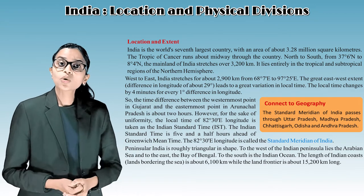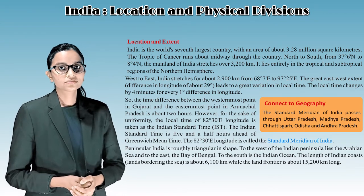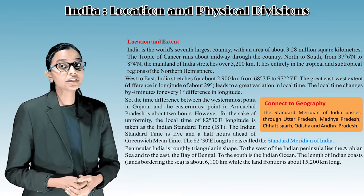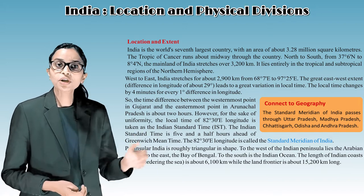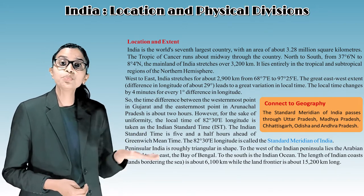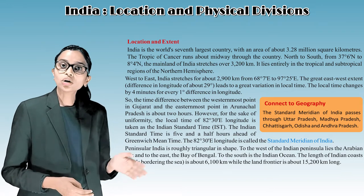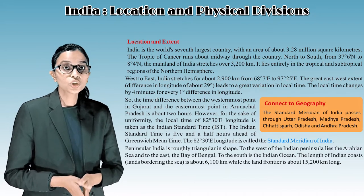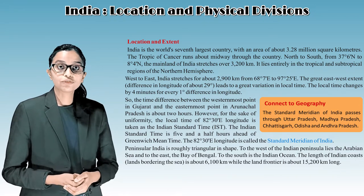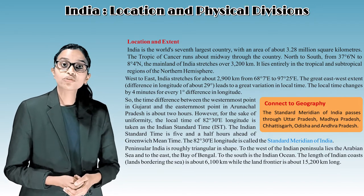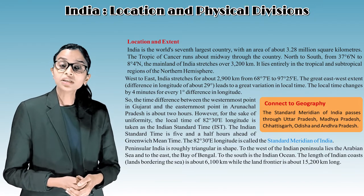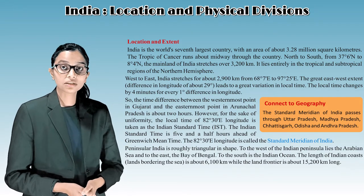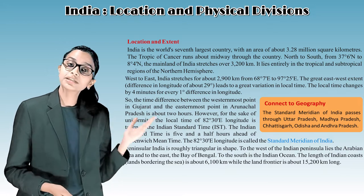India is the world's seventh largest country with an area of about 3.28 million square kilometers. The Tropic of Cancer runs about midway through the country. From north to south, India extends from 37°6' North to 8°4' North, stretching over 3,200 kilometers. It lies entirely in the tropical and subtropical regions of the northern hemisphere.